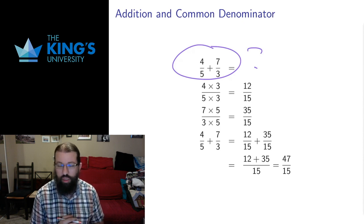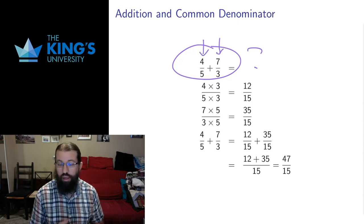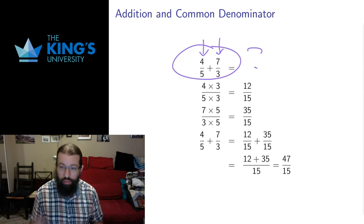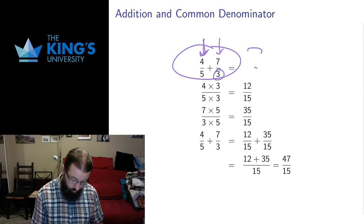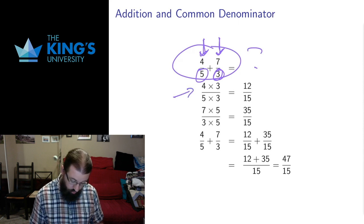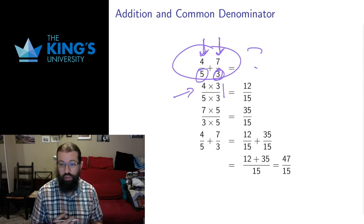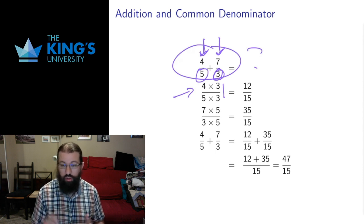What I'm going to do is multiply the numerator and denominator of each fraction by the denominator of the other fraction. So in the first fraction I multiply by the denominator of the other fraction, and in the second fraction I multiply by the denominator of the first fraction. As I said in the previous video, you're allowed to multiply or divide numerators or denominators by anything you want, as long as you do the same thing to both the numerator and denominator.